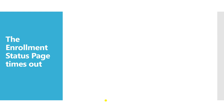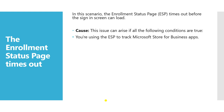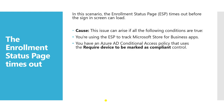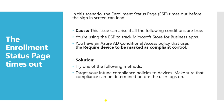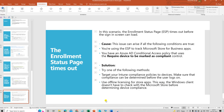The Enrollment Status Page timeout error can arise if you are using ESP to track Microsoft Store for Business apps, or if you have an Azure AD conditional access policy that requires the device to be marked as compliant. The solution is to target your Intune compliance policy to the device and ensure compliance is determined before user login, or use offline licensing for store apps so the device compliance check is not blocked.